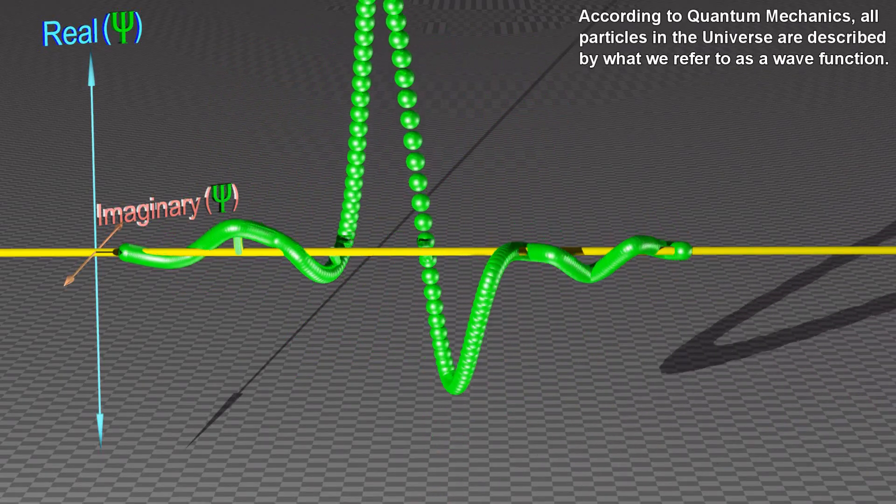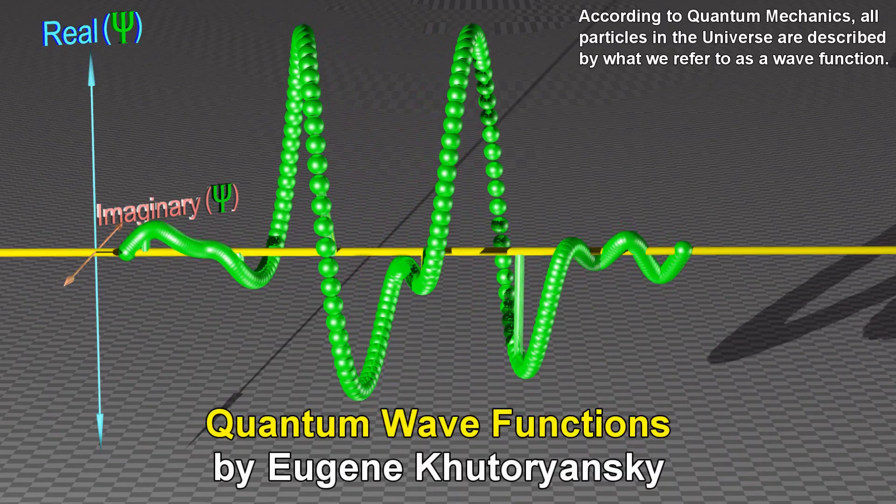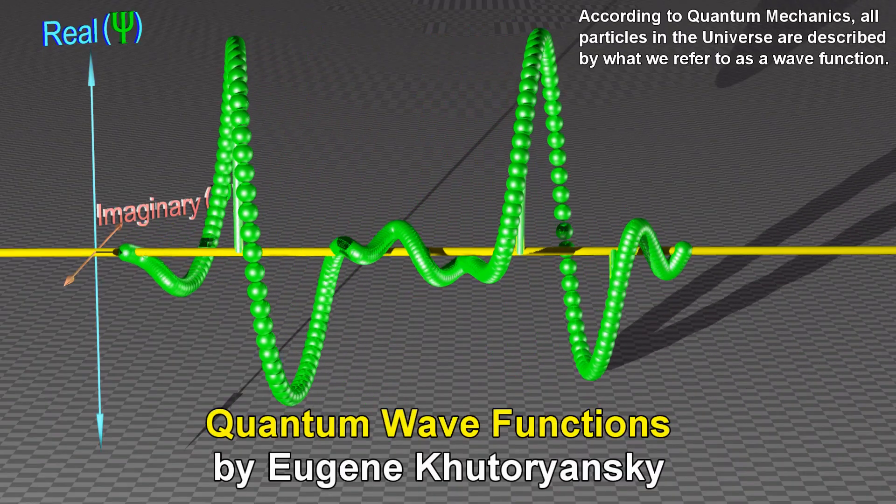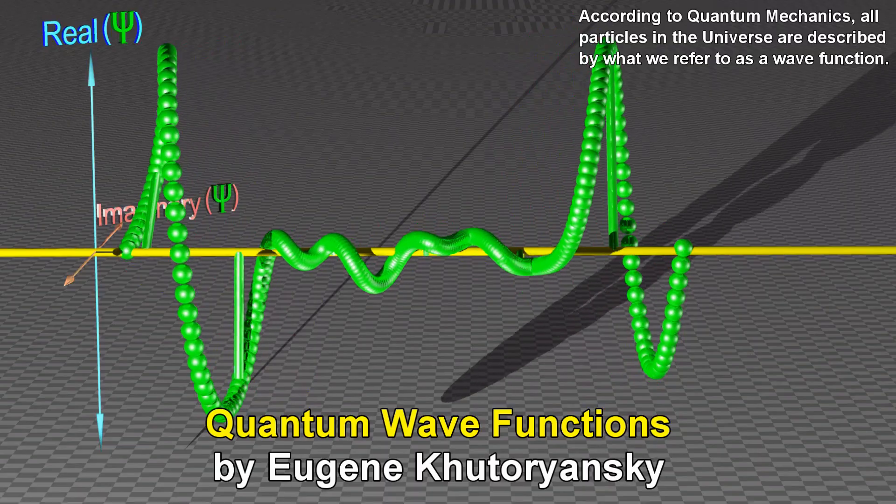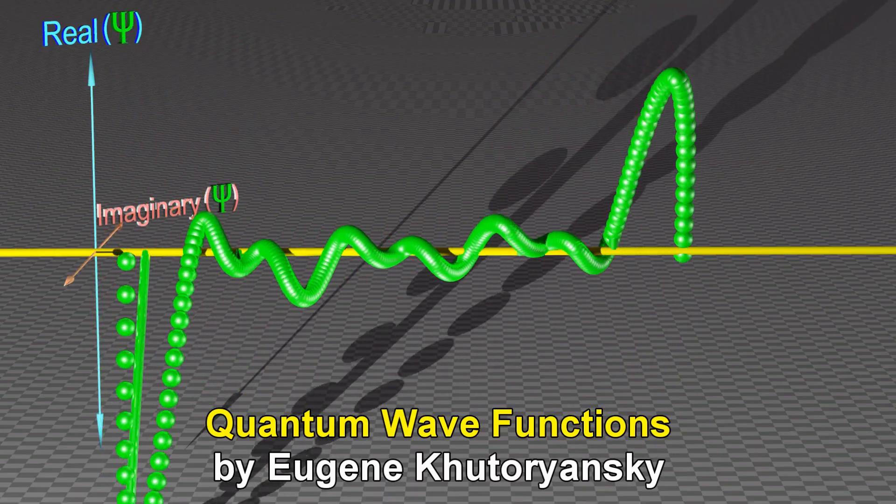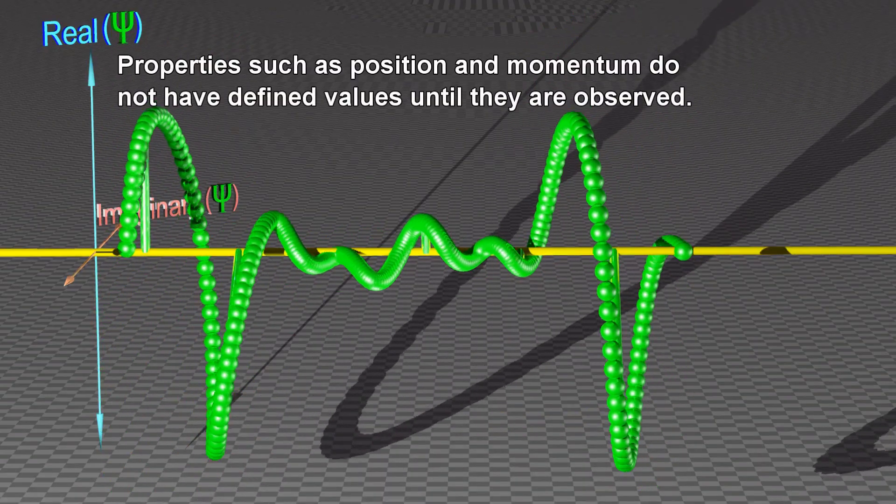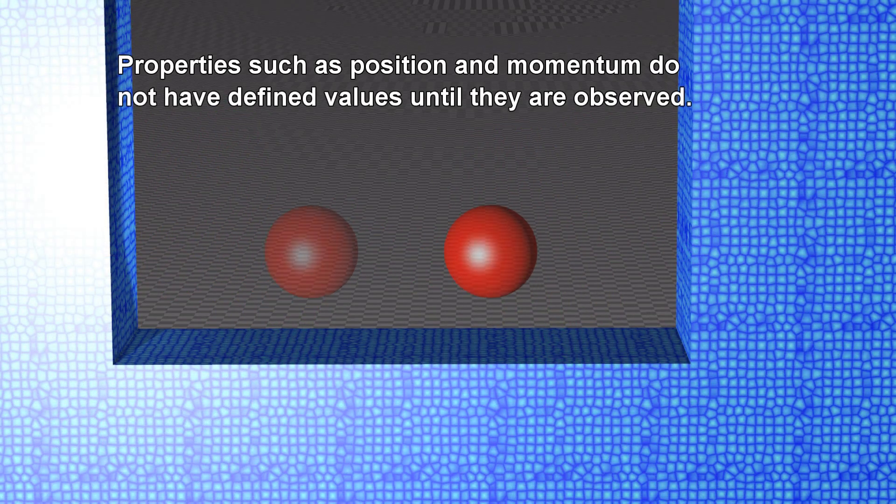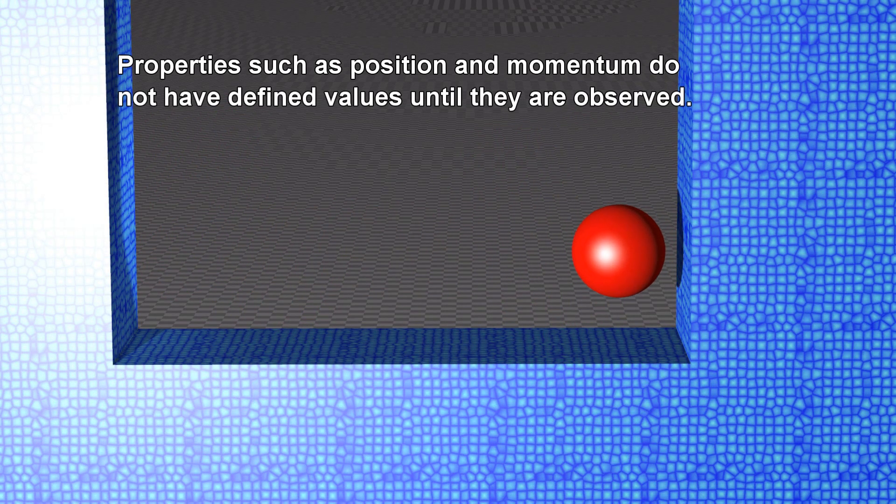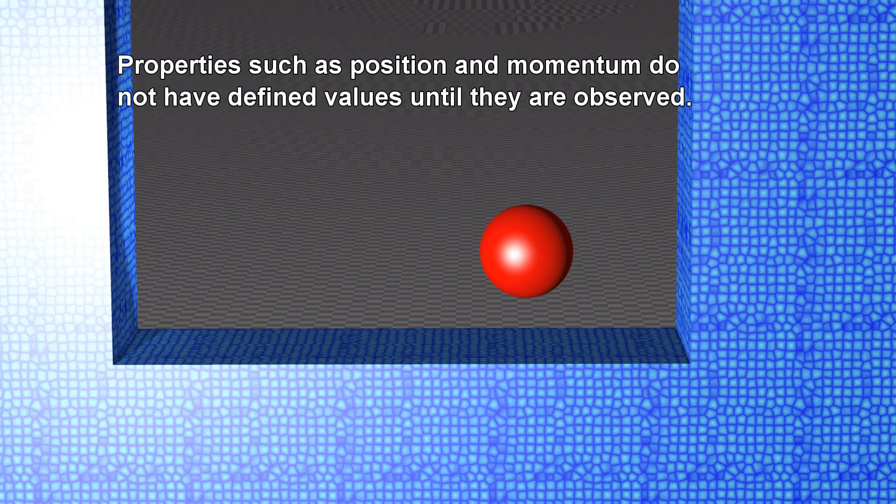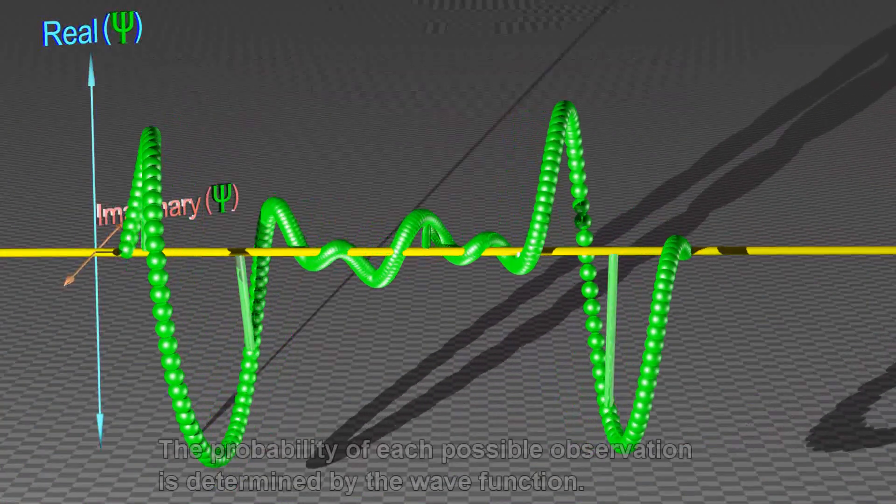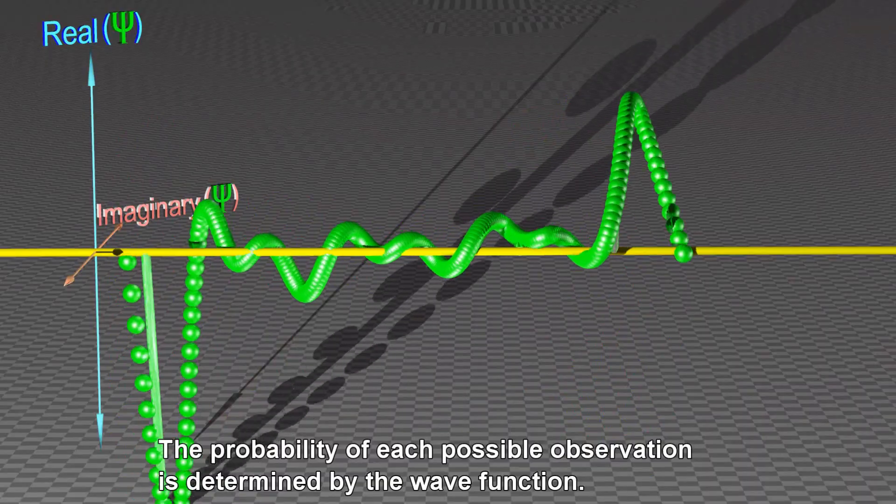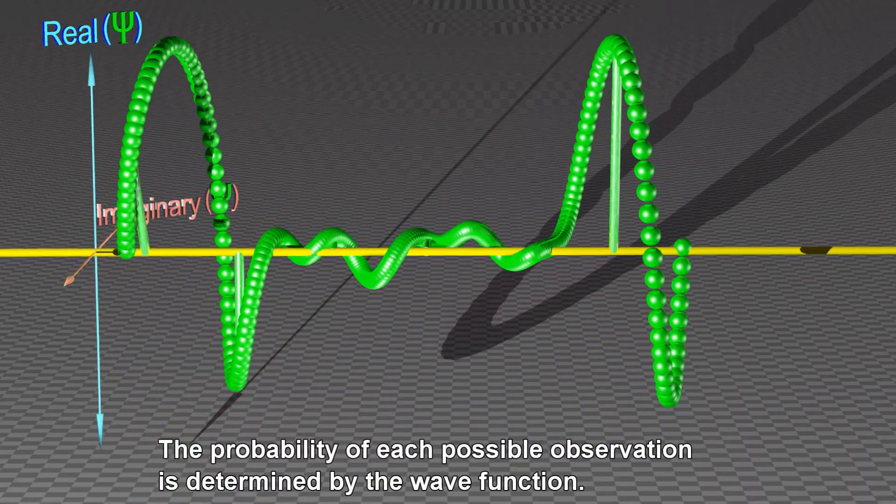According to quantum mechanics, all particles in the universe are described by what we call a wave function. Properties such as position and momentum do not have defined values until they are observed. The probability of each possible observation is determined by the wave function.